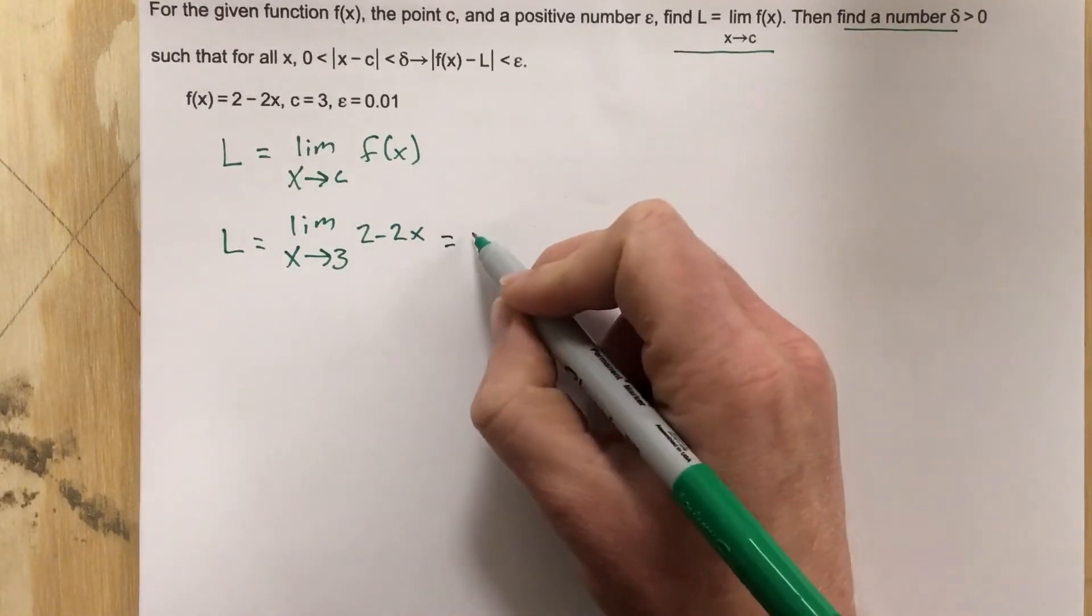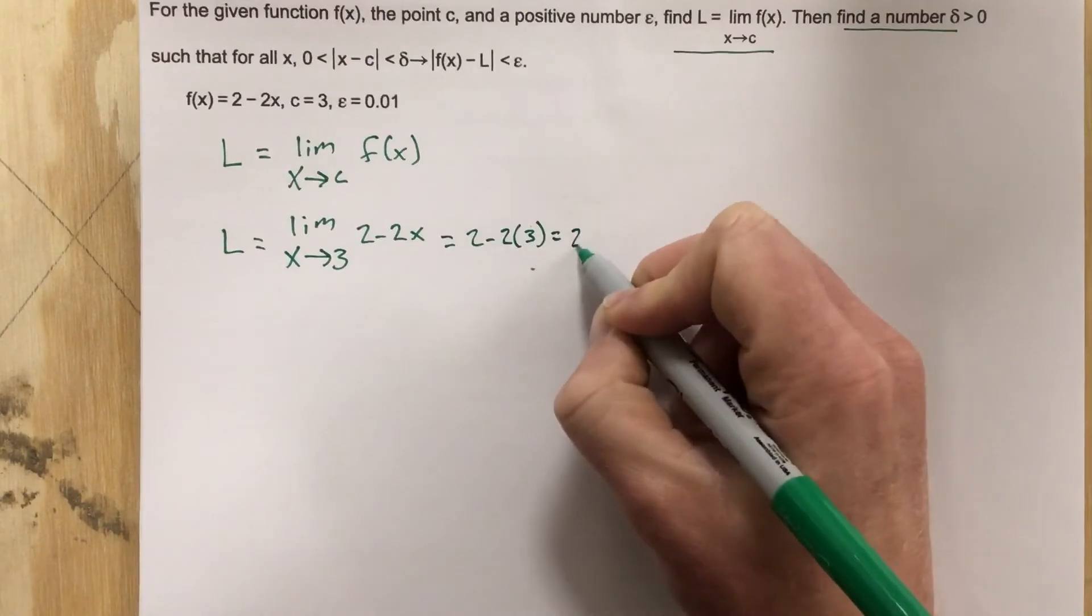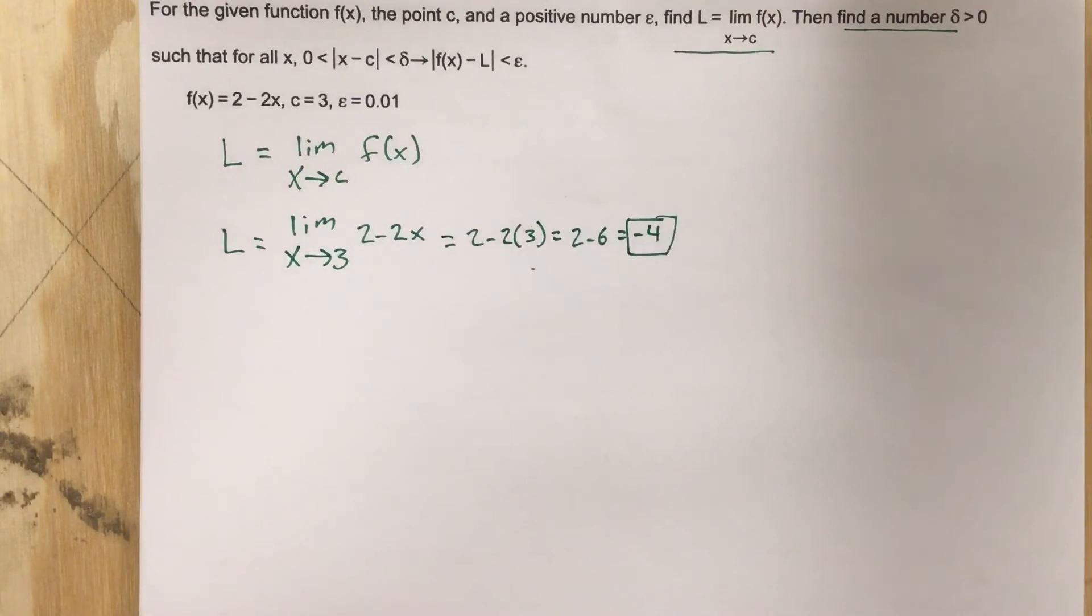we know that linears or polynomials are defined at every x value. So we can go ahead and just plug that in and say that this is equal to 2 minus 2 times 3, which is 2 minus 6, which is negative 4. So our L value is negative 4.